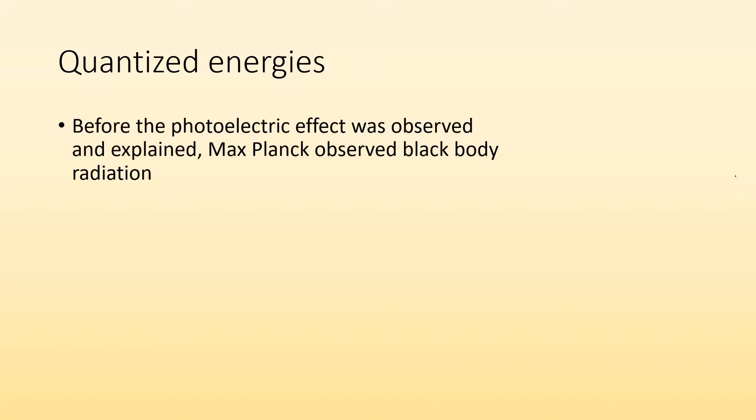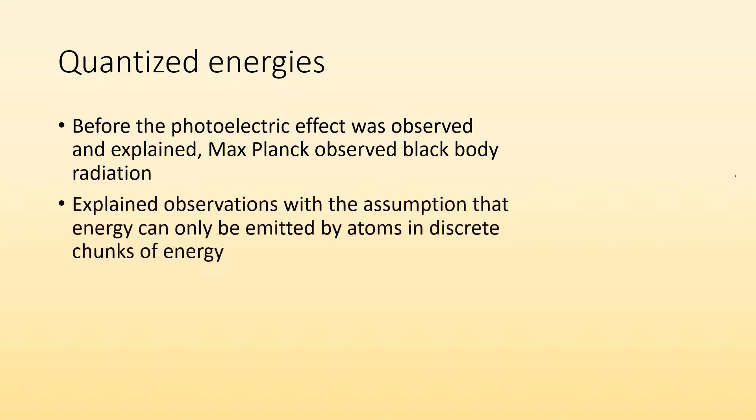Quantized energies. Before the photoelectric effect was observed and explained, Max Planck observed black body radiation, which is basically when you get something really hot and it starts to give off light like red hot, white hot. He explained observations with the assumption that energy can only be emitted by atoms in discrete chunks of energy. So this energy had a minimum size, like how a penny is the smallest bit of a dollar. You can't have half a penny. It's quantized, meaning that there's certain discrete fixed amounts.